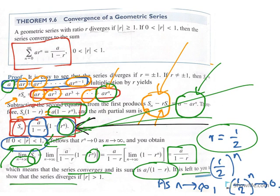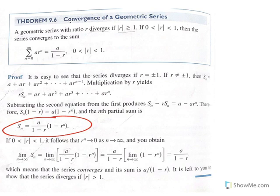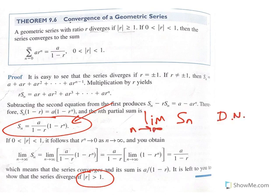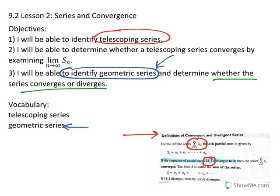It is left to you to show the series diverges if the absolute value of the common ratio is greater than 1 — you would argue that the limit of the nth partial sum does not exist, so the sequence of partial sums diverges, and therefore the series diverges by definition. We have covered objective 3: identifying a geometric series, using the theorem to determine convergence or divergence, and the proof of the theorem.